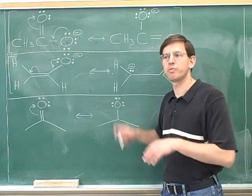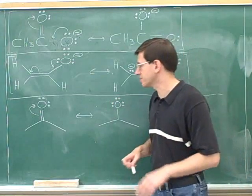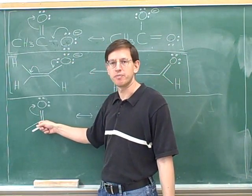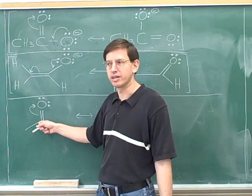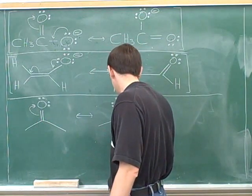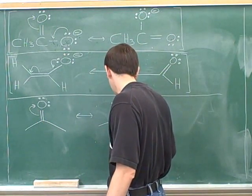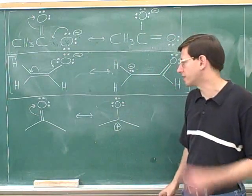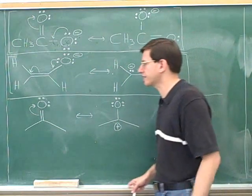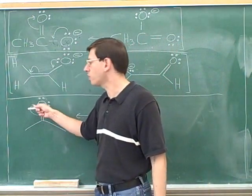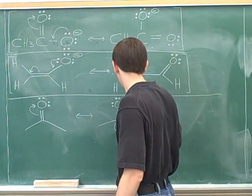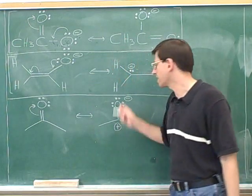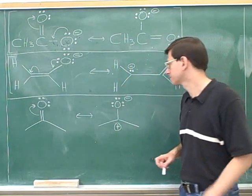Now, remember the most important point is the charges. The electrons are moving away from this bottom carbon, so the carbon must be becoming more positive. There is now a positive charge on this carbon, and the electrons are moving towards the oxygen, so this oxygen has become more negative.